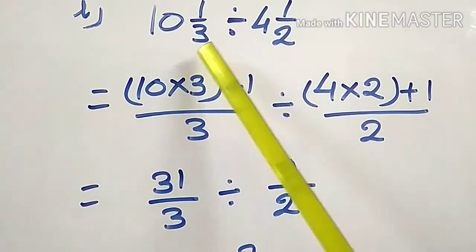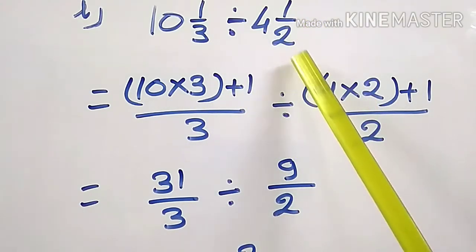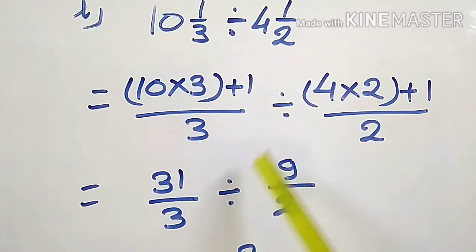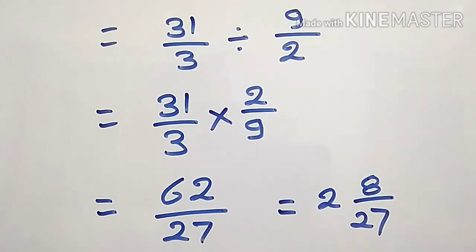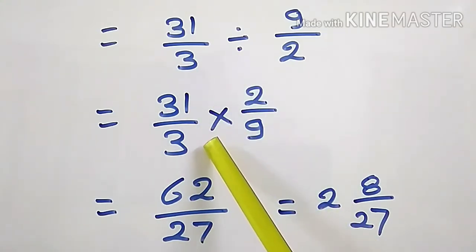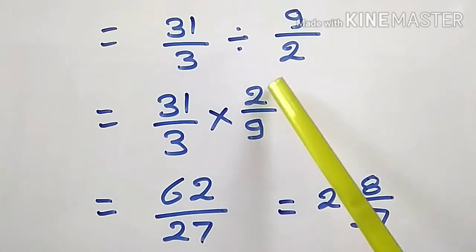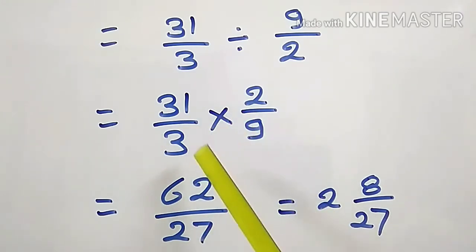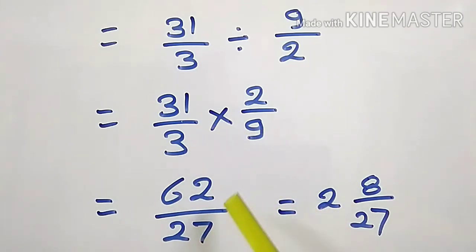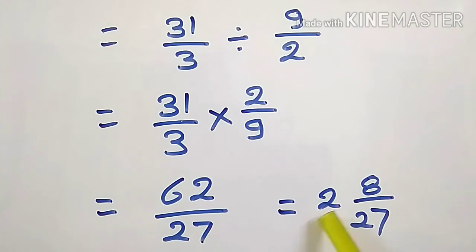Question I: 10 and 1/3 divided by 4 and 1/2. Convert both mixed numbers into improper fractions. 10 into 3 is 30, plus 1 is 31/3. 4 into 2 is 8, plus 1 is 9/2. So 31/3 divided by 9/2. Write 31/3, change the sign of division into multiplication and take reciprocal of 9/2, which is 2/9. No common factor in numerator and denominator. Multiply numerator: 31 twos are 62, and denominator: 3 nines are 27. It is an improper fraction, so divide 62 by 27: quotient 2, remainder 8. So 2 and 8/27 is the quotient.